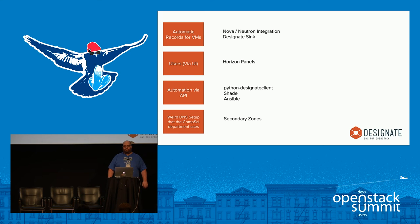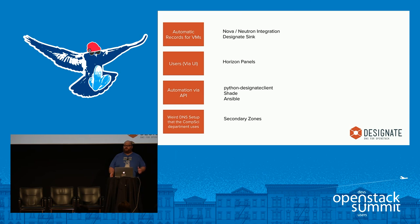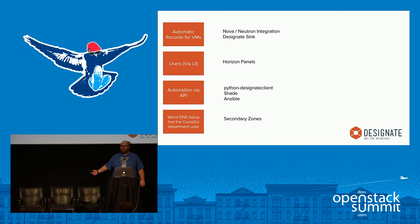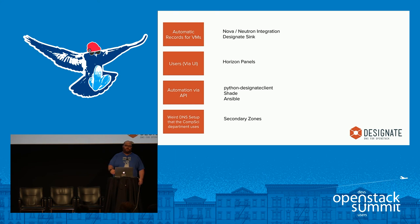We have Horizon panels, a CLI tied in with the OpenStack client as a plugin — so you can do `openstack zone create`. Shade is a client library for OpenStack that makes interaction simpler, and there's Designate support in there, including Ansible support for creating records if Ansible is part of your workflow. For the weird DNS setup use case, we support secondary zones: if you have your own DNS server, we can zone-transfer the information, pull it into the Designate database, and push it out to Designate servers. Records from secondary zones can't be edited in Designate — as soon as new info is pushed to the source server, we do a new zone transfer.